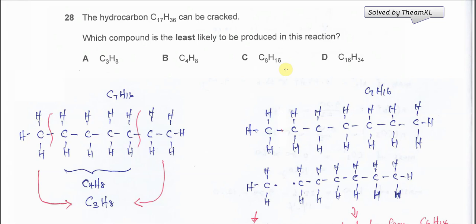Question 28. The hydrocarbon C17H36 can be cracked. Which compound is the least likely to be produced in this reaction?